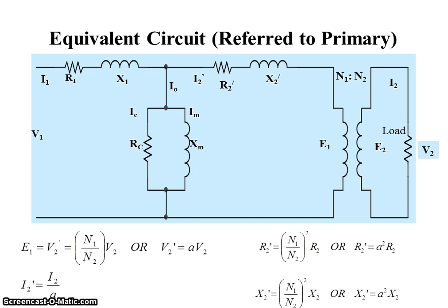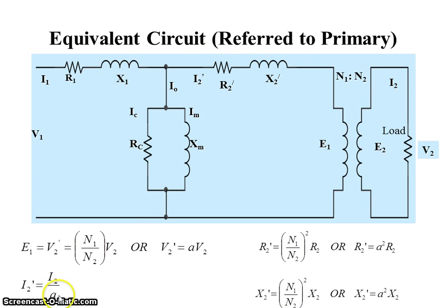The equivalent circuit may be calculated as referred to primary side or referred to secondary side. The equivalent circuit referred to primary side means the secondary parameters will come to the primary side with some changes. V1 is the terminal voltage of primary side, I1 is the primary side current, R1 and X1 are the resistance and reactance of the primary side. R2 dash and X2 dash are the changed values of the secondary parameters. These secondary parameters have values as shown in the equations, using the transformation ratio: V2 dash becomes A·V2, I2 dash becomes I2/A, R2 dash becomes A²R2, and X2 dash becomes A²X2, where A is the transformation ratio.